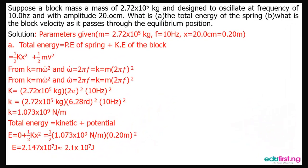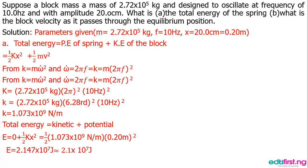The third question: a block of mass 2.7 × 10^5 kg oscillates with a frequency of 10 Hz and an amplitude of 20 cm. We are asked for the total energy of the spring. Since we are not given k directly, we use k equals m omega squared, where omega equals 2 pi f. This gives k equals 1.073 × 10^9 N/m. The total energy equals half k x squared.